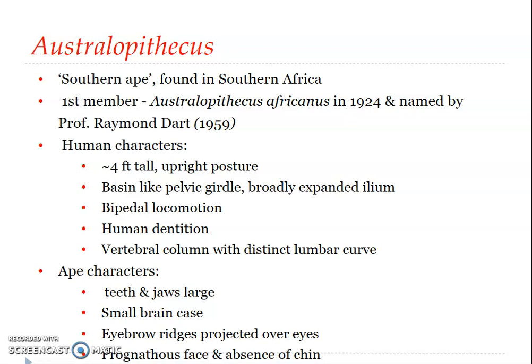Australopithecus was the first member of this group. It was found in 1924 and named Australopithecus africanus by Professor Raymond Dart. The name Australopithecus refers to 'southern ape' because the fossils were found in South Africa. Some members of this group dated to around 3.1 million years ago. These South African apes possess many characteristics of humans combined with those of apes, which is why they are considered ape-men or man-like apes.